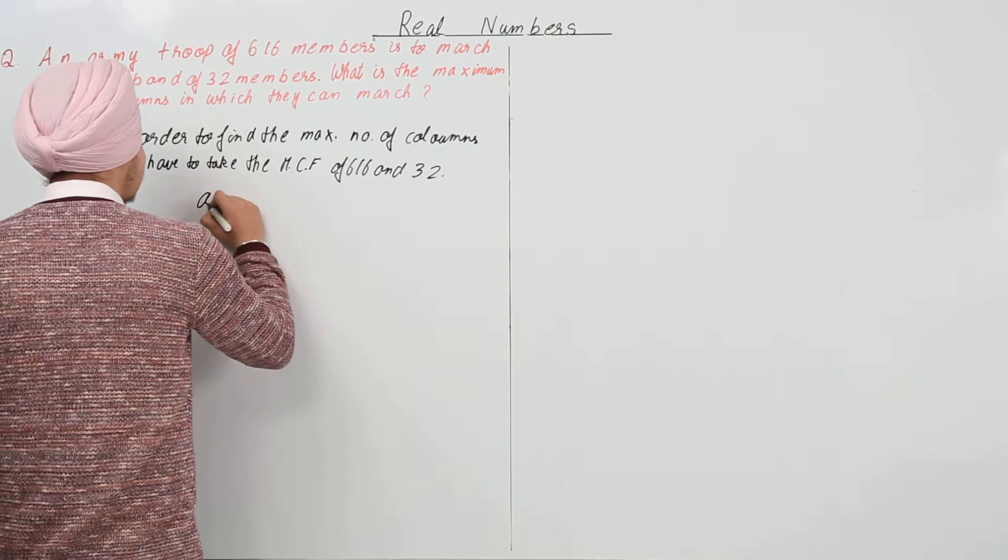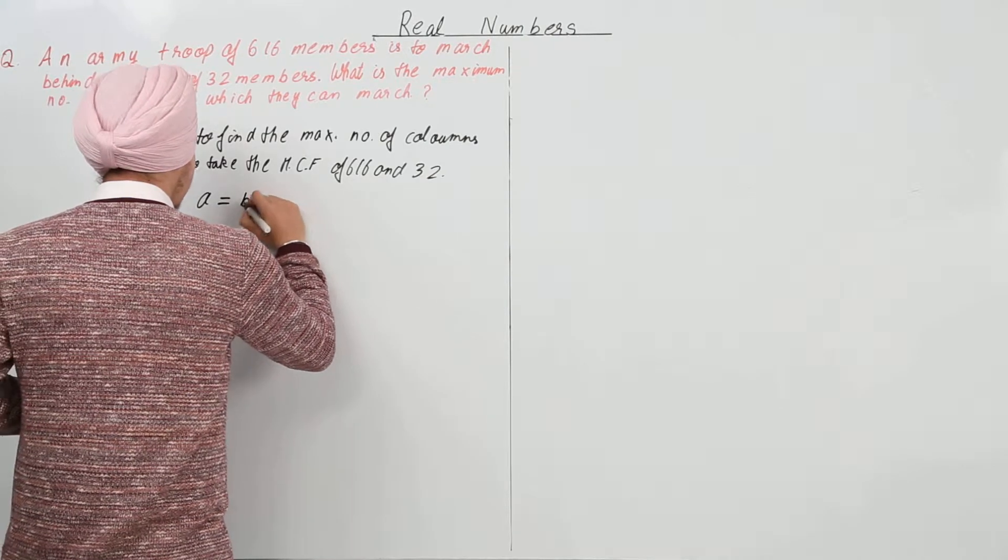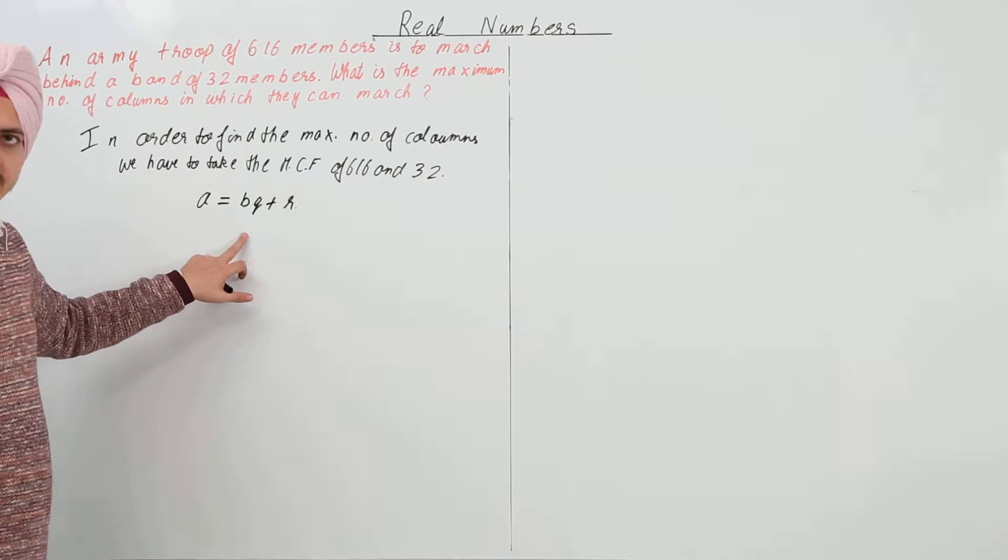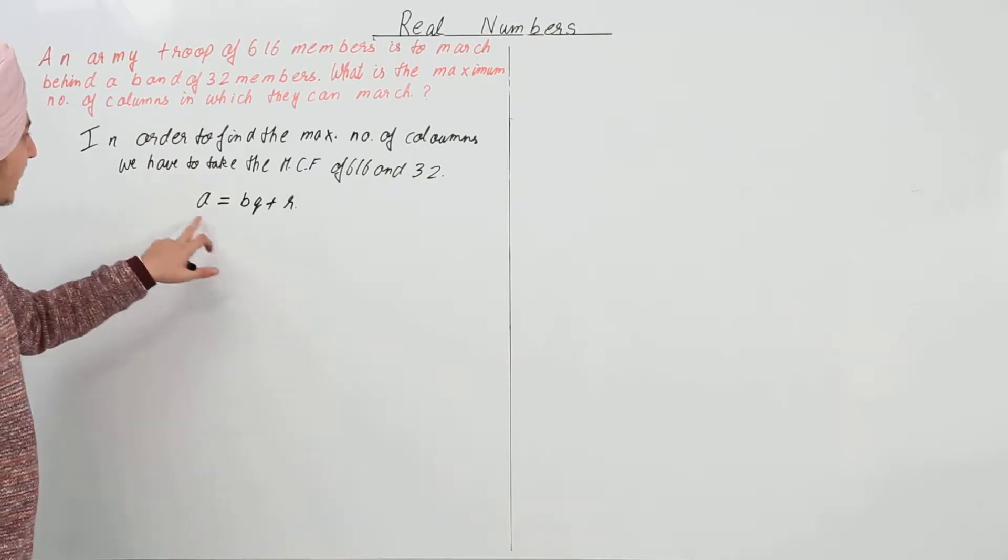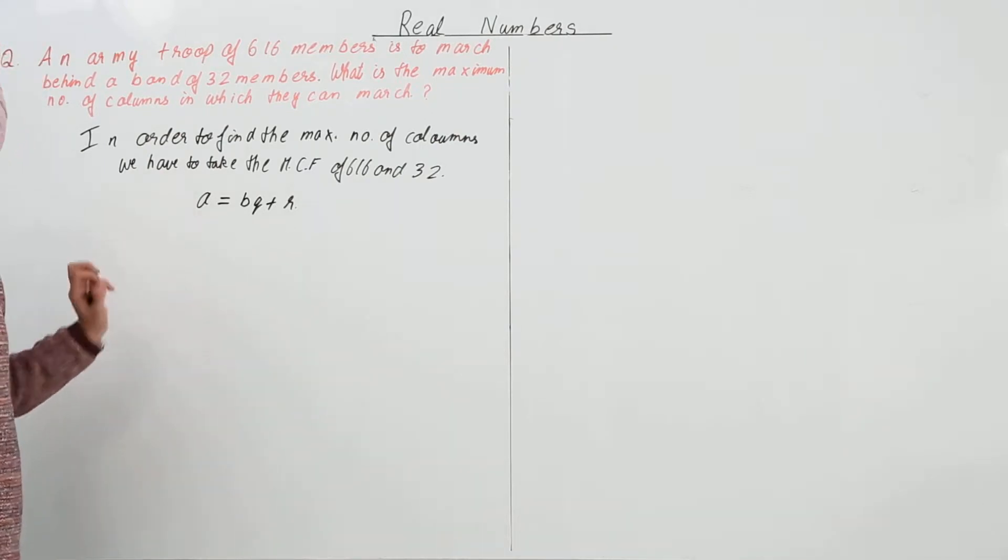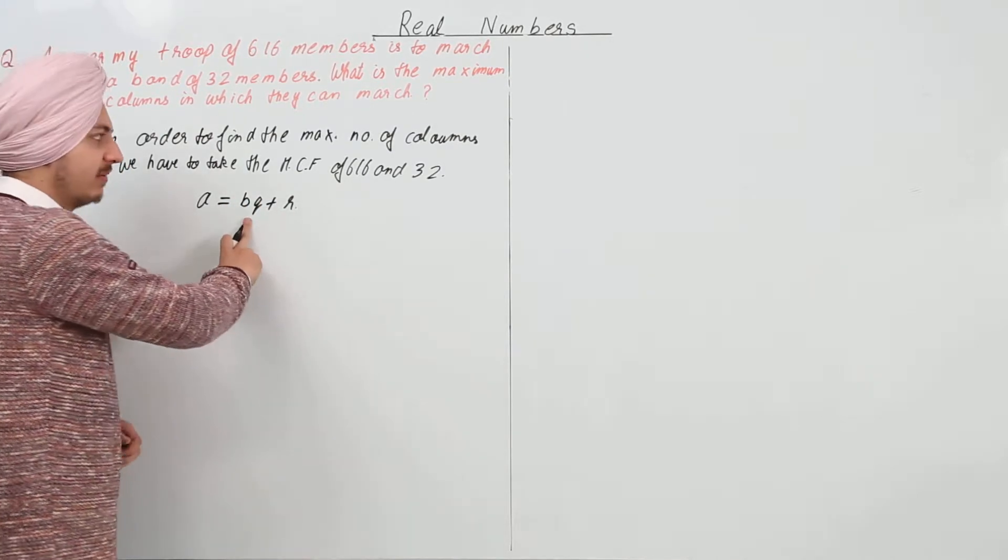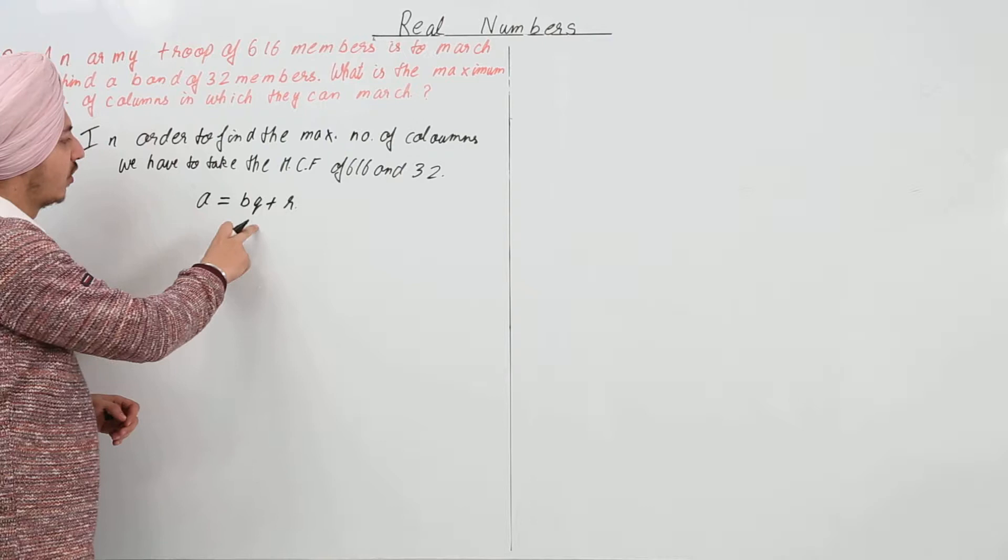So what did that say? That said A is equal to BQ plus R, where A is greater than B and R is less than B. So we have A will be the larger number and B will be the smaller number, and we will find out Q and R.